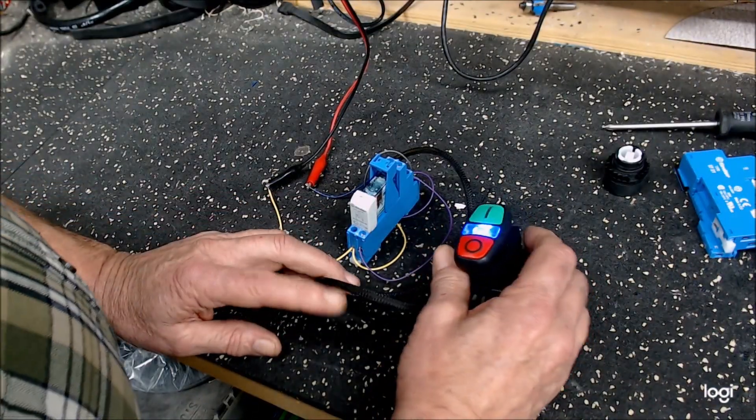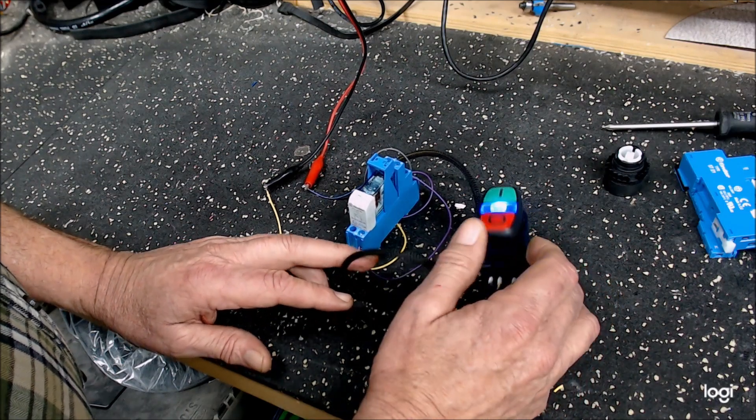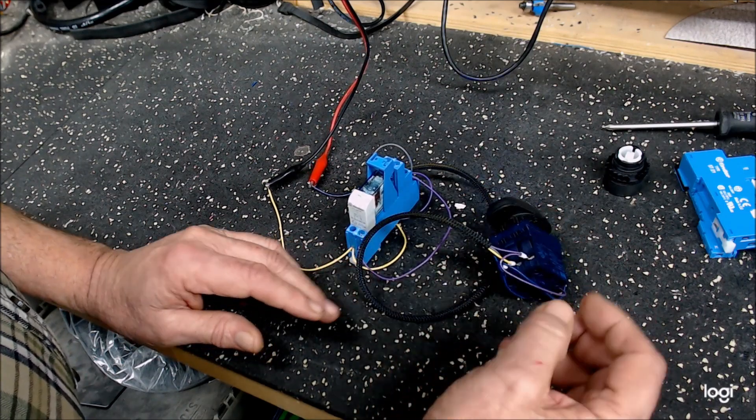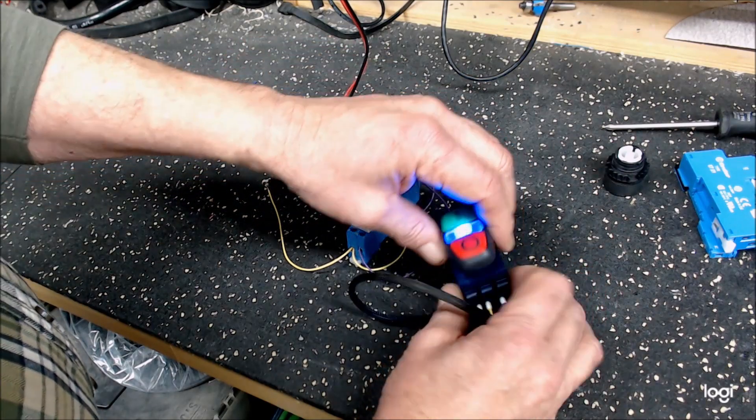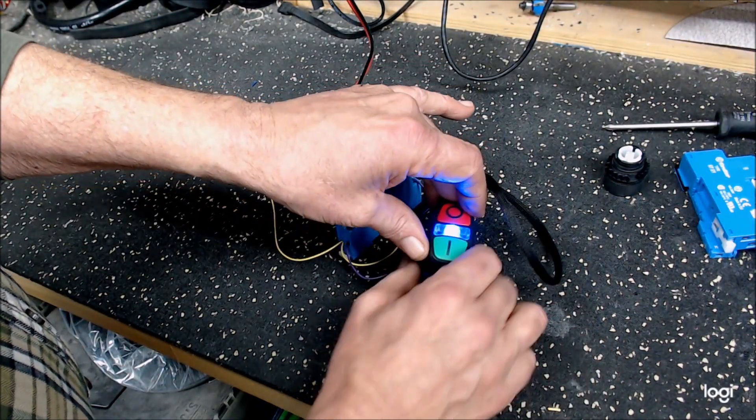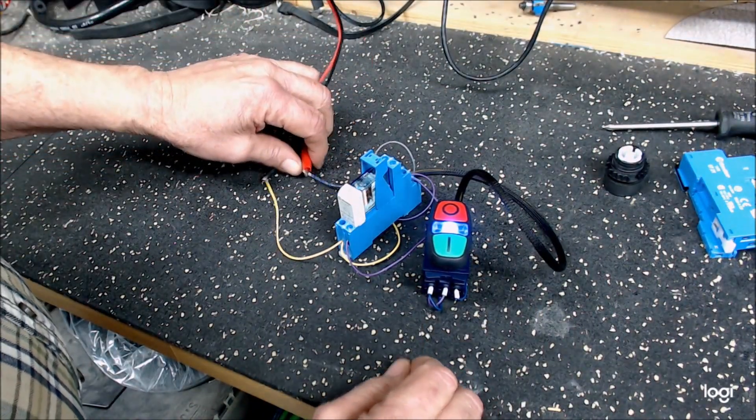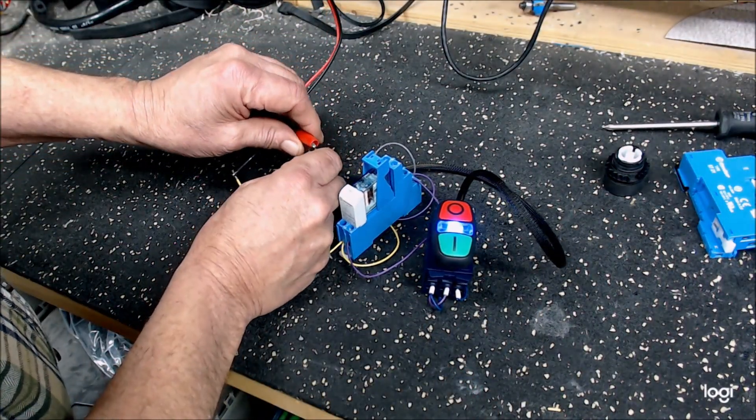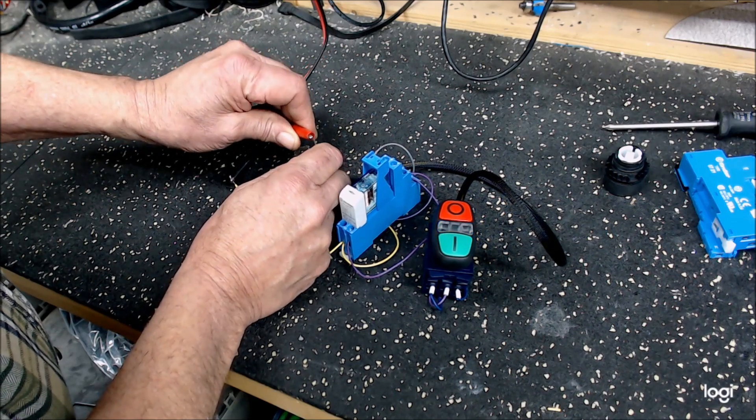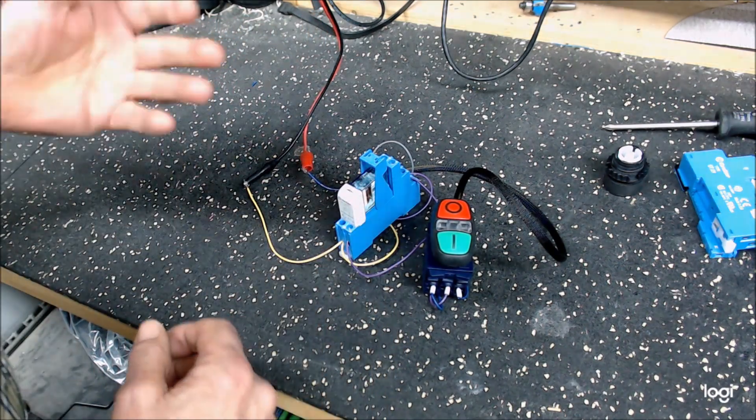Now the reason that you want to use these relay circuits is in case something you're controlling is a safety type device. Latching circuits are used in case there's an e-stop or a power shortage. I'm going to disconnect the power - there it goes off. If the power were to come back on, it will not energize.